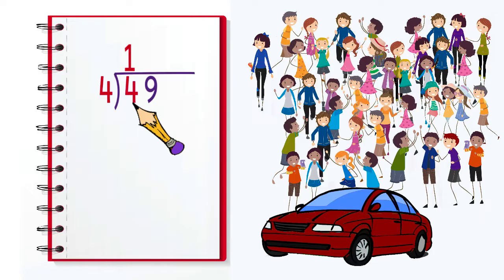Next, we would multiply four times one, getting four. We would put that under the number we divided into and subtract, getting zero.